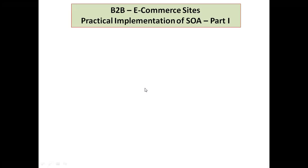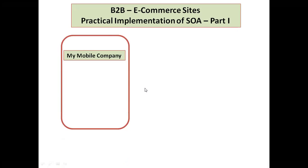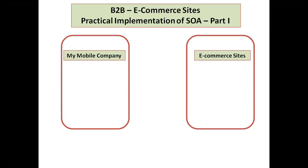I am having one company and the name of the company is My Mobile Company. I want to sell my mobile phones through any e-commerce site — that may be Amazon, Flipkart, or eBay. So any e-commerce site I want to sell my mobile phones through, my mobile company requires the service oriented architecture. I have to develop web services and share them with different e-commerce sites when I want to do this B2B e-commerce.